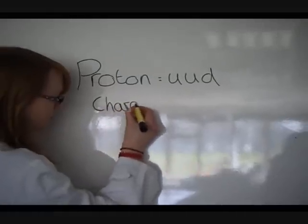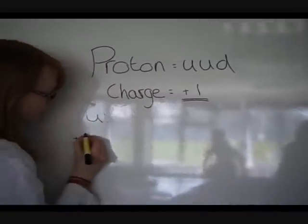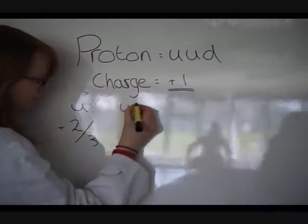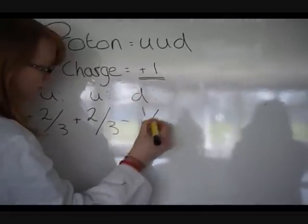As this scientist lady will now show you, up quarks have a positive charge of plus two-thirds, and down quarks have a negative charge of minus one-third. So protons are made of two up quarks and one down quark, because two-thirds add two-thirds, minus one-third equals plus one.